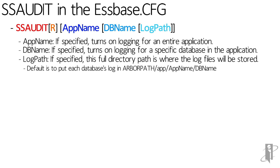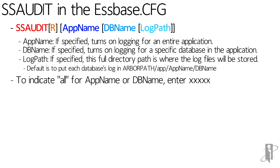If you don't specify a log path, it's going to go right into the database directory. Some people ask: what if I want to change the log path but don't want to specify a database name or application name? There's a quirky syntax thing in SS Audit — if you want to indicate all applications and all databases, you can use five X's and then eventually specify the log path.